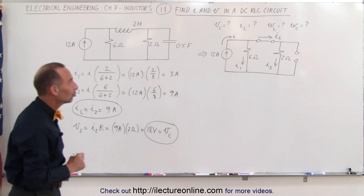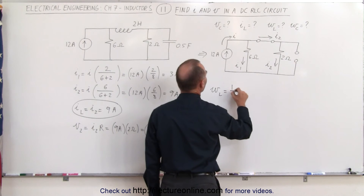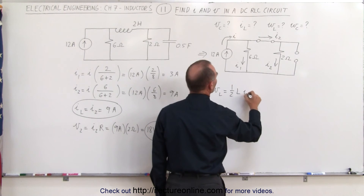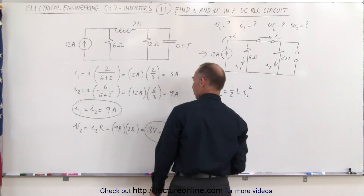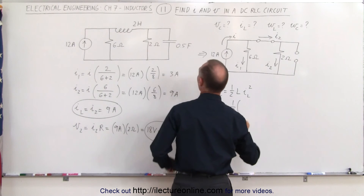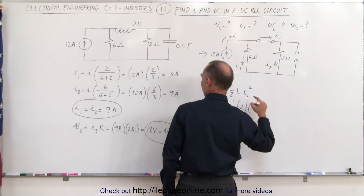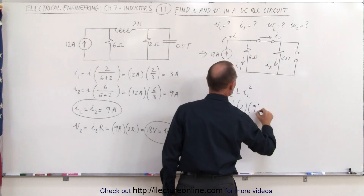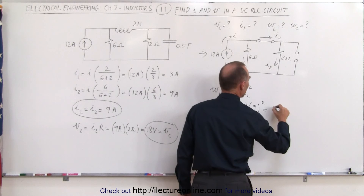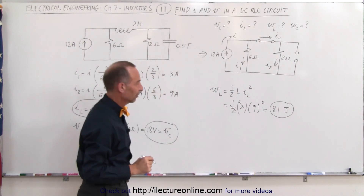Next, we need to find the energy stored in the inductor. That equals one half times the inductance times the current squared — one half times L, which is 2 henries, times 9 squared. The 2s cancel, giving us 81, so there are 81 joules of energy stored in the inductor.